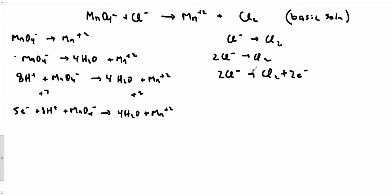Next thing I have to do is make sure the number of electrons is the same in both reactions before I add them together. 5, 2, looks like I should shoot for 10. I'm going to multiply this whole equation by 5, I'm going to multiply this equation by 2.